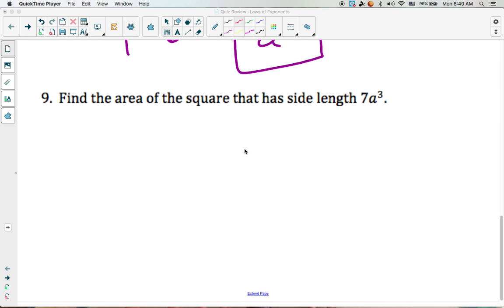Re-quiz review, laws of exponents, problem number nine. Find the area of a square that has side length of 7a to the third.